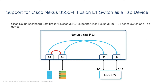Ports A1 and A2 of the TAP device receive traffic from a production switch. These are called network ports. A bi-directional traffic flow is established between the network ports. Traffic on the network ports is mirrored to ports B1 and B2, called mirror ports.